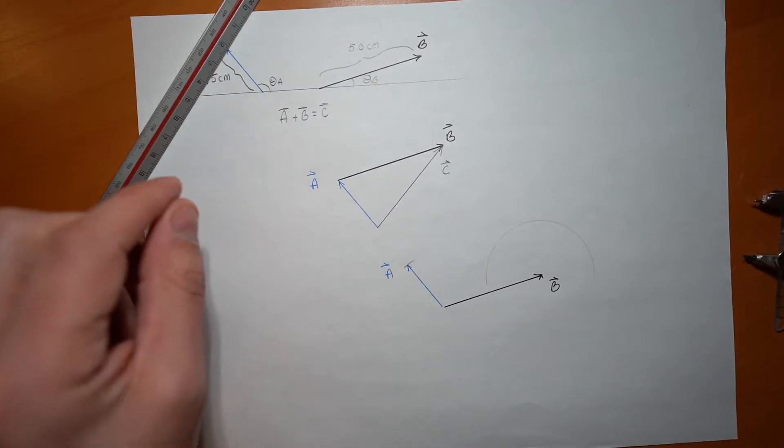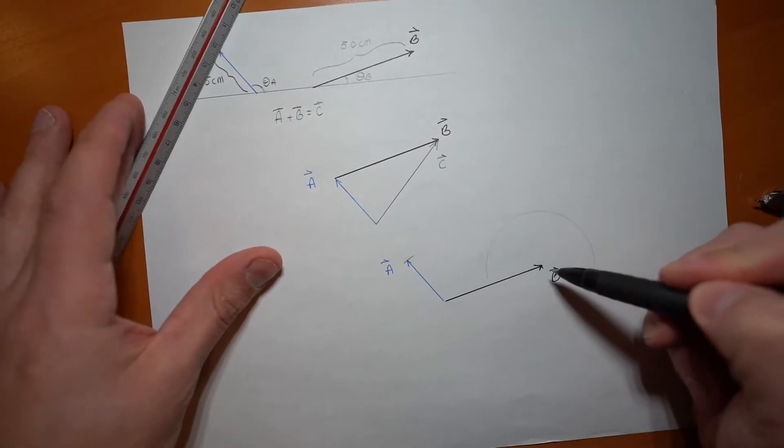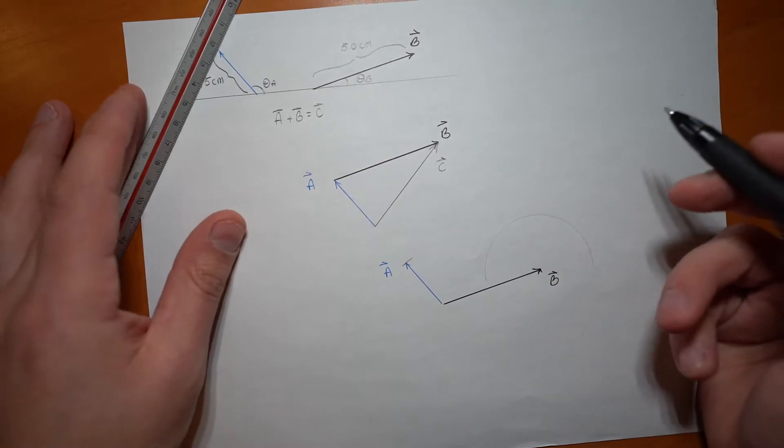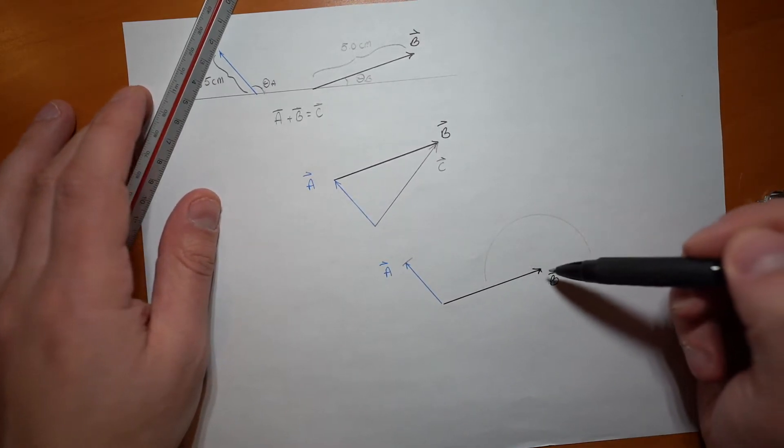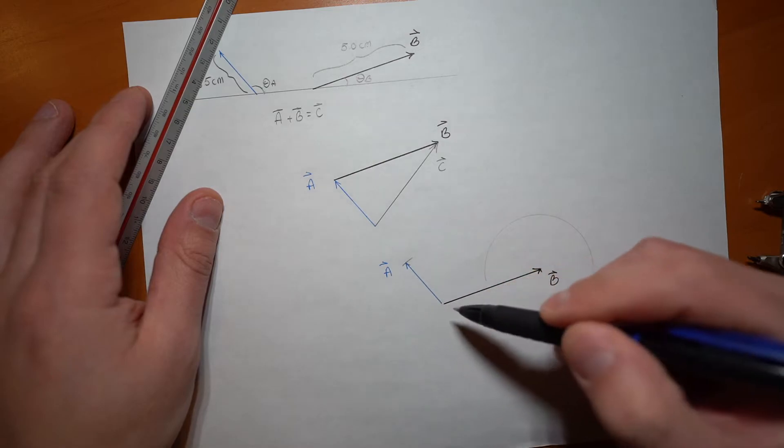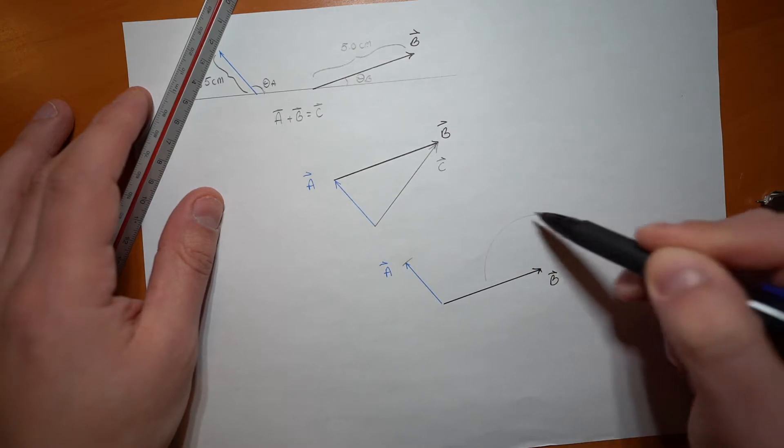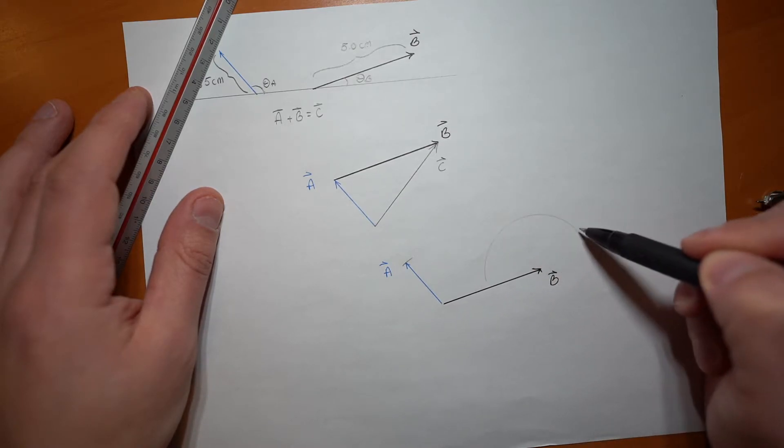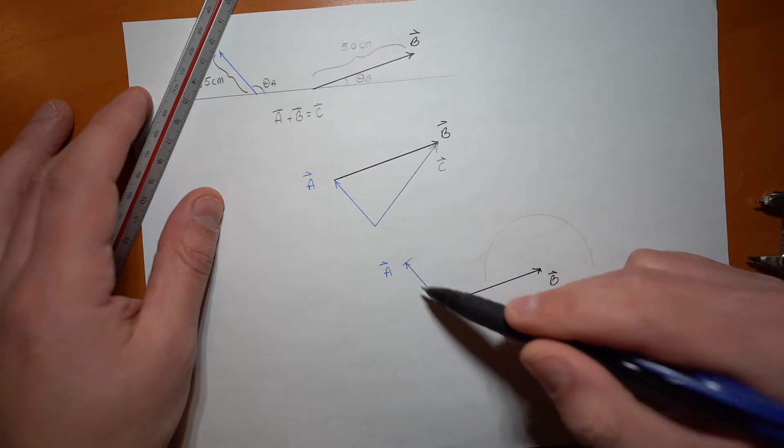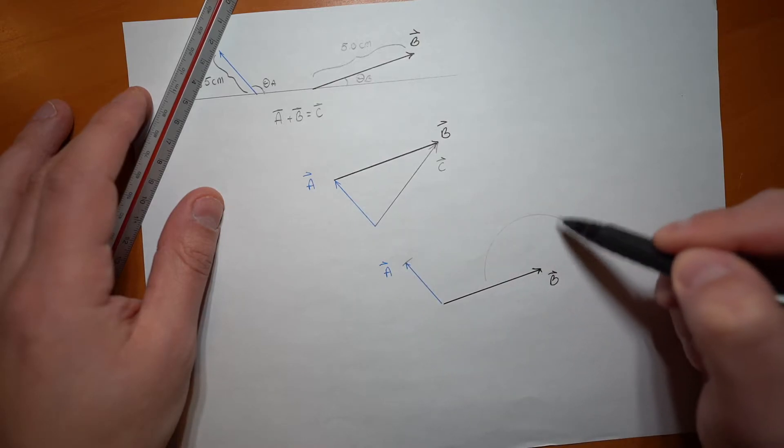This arc represents every vector coming off of B. Well, not every, because I didn't make the full circle, but pretty much every vector coming off of B that's exactly the same length as A. So the same length as A in this direction, in this direction, in this direction. This is almost like infinitely many vectors that are all the length or magnitude of A being added to B.